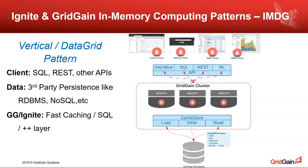There are a number of patterns that Ignite delivers. The basic caching pattern is also called an in-memory data grid. It's shown here, and I've given this the nomenclature of vertical pattern — vertical because we have our traditional database at the bottom.